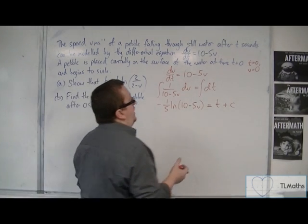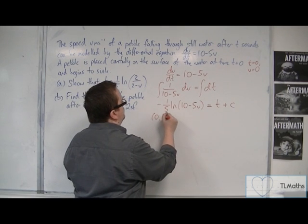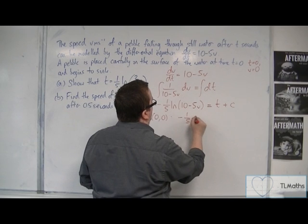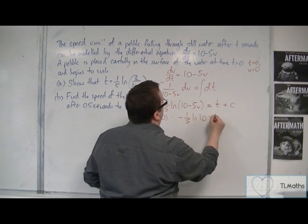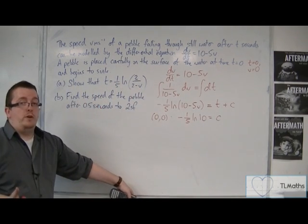So then we can substitute in our initial conditions. When t is 0, v is 0. So we're going to get minus one-fifth log 10 equals 0 plus c. So that's just c. So that's found c for us.